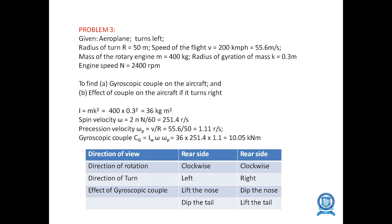Problem 3: For an airplane which turns left — given radius R = 50 m, speed V = 200 km/h (55.6 m/s), mass of rotary engine M = 400 kg, radius of gyration K = 0.3 m, engine speed = 2400 rpm. Find the gyroscopic couple and the effect on the aircraft if it turns right. First, find I = Mk². Then spin velocity ω = 2πn/60, and angle of precession ωp = V/R. Gyroscopic couple C = I·ω·ωp = 110.05 kN·m.